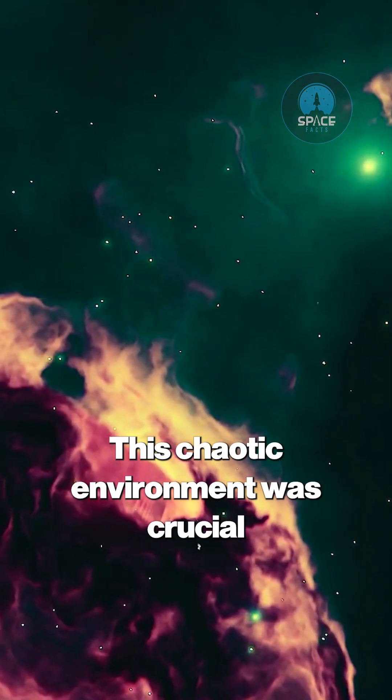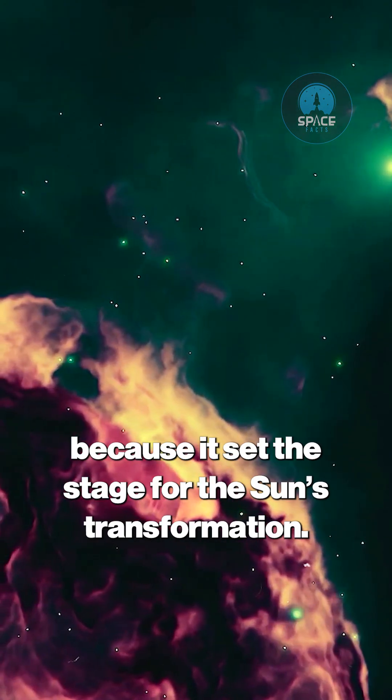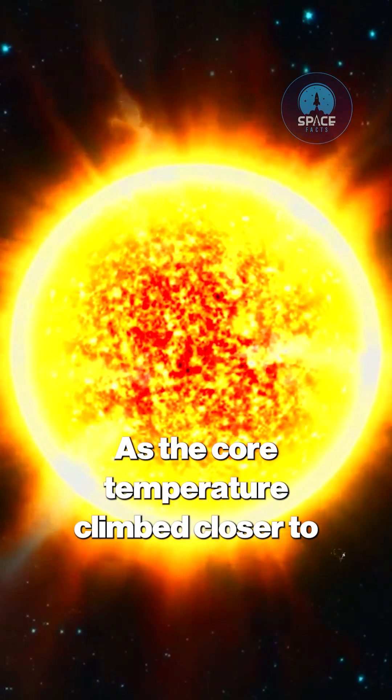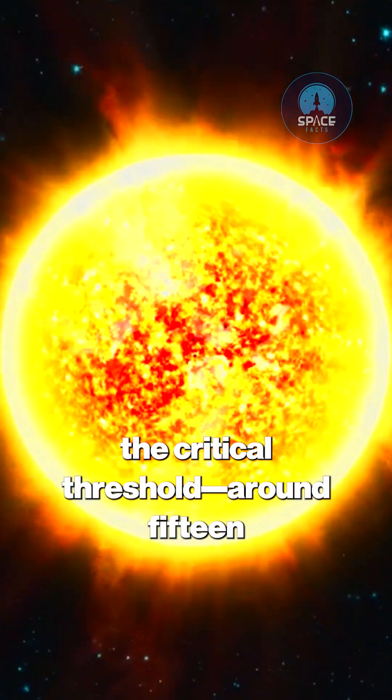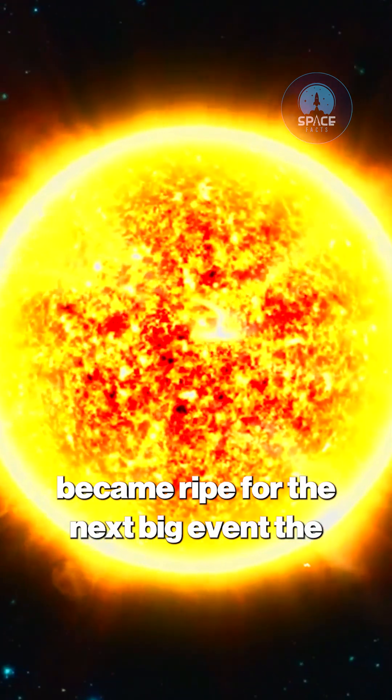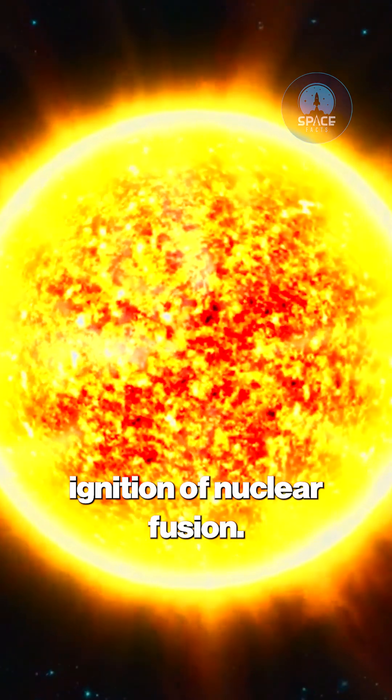This chaotic environment was crucial because it set the stage for the Sun's transformation. As the core temperature climbed closer to the critical threshold, around 15 million degrees Celsius, the conditions became ripe for the next big event: the ignition of nuclear fusion.